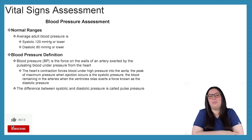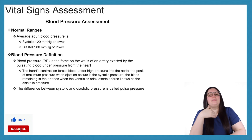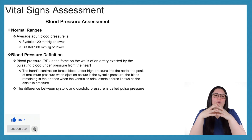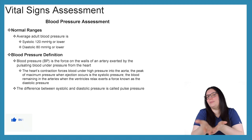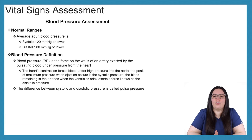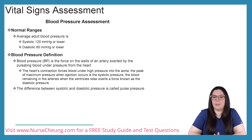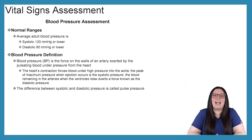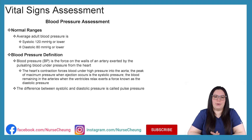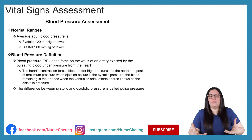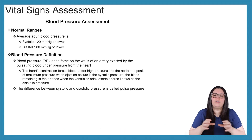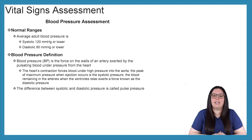Let's talk about what that blood pressure assessment is going to look like. To begin, we really need to know what our normal ranges are. When it comes to the average adult blood pressure, we're looking at a systolic of 120 or lower and a diastolic of 80 or lower. The definition of blood pressure is the force on the walls of an artery exerted by the pulsating blood under the pressure from the heart.